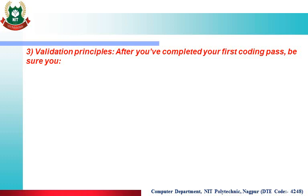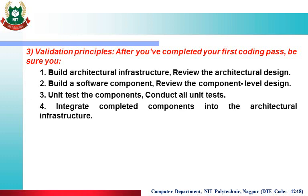The Validation Principle: after you have completed your first coding pass, review the architectural design and build the software component, then review the component-level design. Conduct all unit tests for the components. Integrate completed components into the architectural infrastructure.